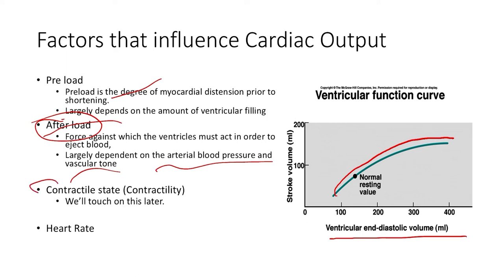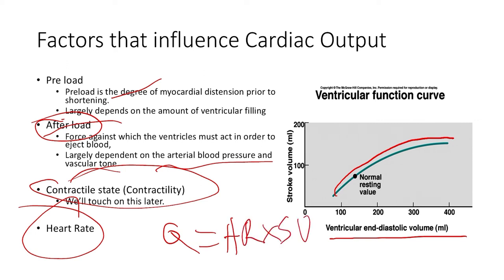And then contractile state or contractility, we'll touch on this a little bit later. And of course, obviously, the heart rate. The byproduct, our cardiac output, or Q, is a byproduct of heart rate times stroke volume. So if we increase heart rate or decrease heart rate, that's going to have an effect on cardiac output.